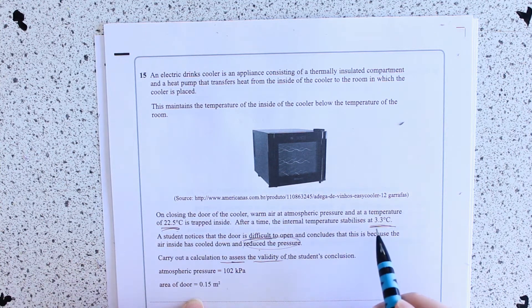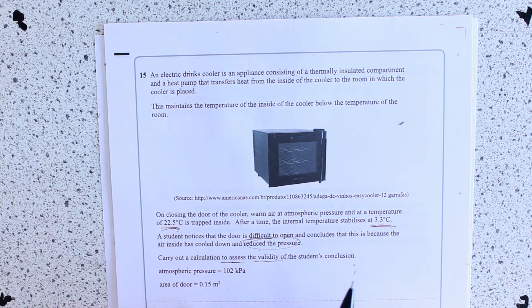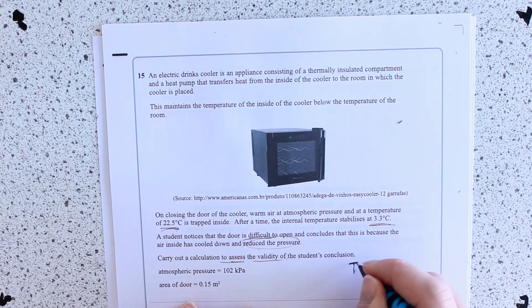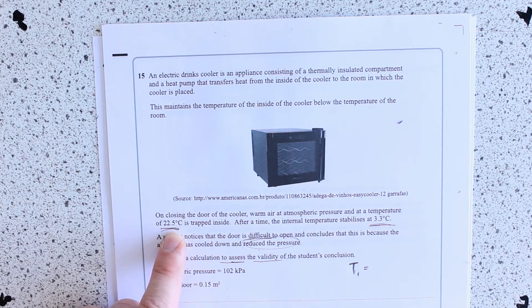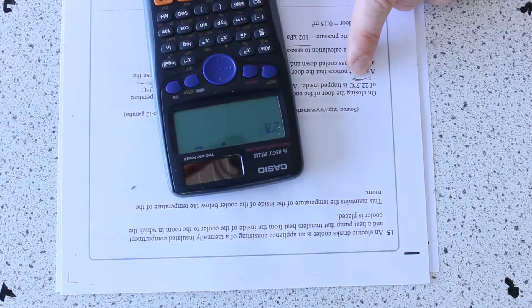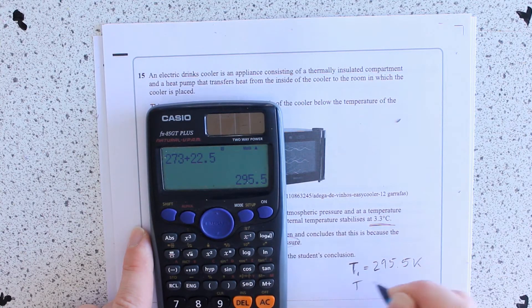So, I've got a few things already here. I hope you're thinking change in temperature. Let's make this T1 and let's convert it straight into Kelvin by adding 273.